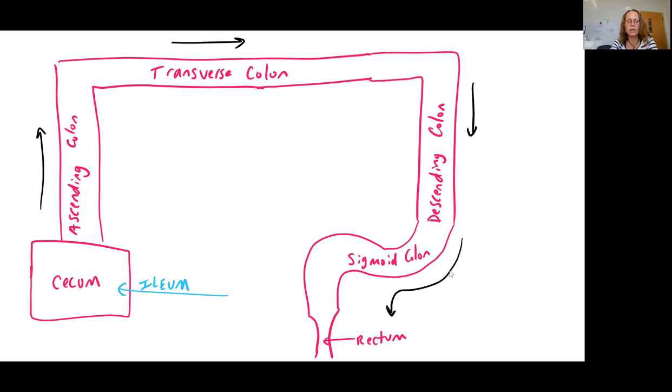Also in this area, but not drawn in the picture, is the appendix, which is actually an important lymphatic organ. It's a little extension here of the large intestine that has a lot of lymphatic tissues. Okay, from the cecum...